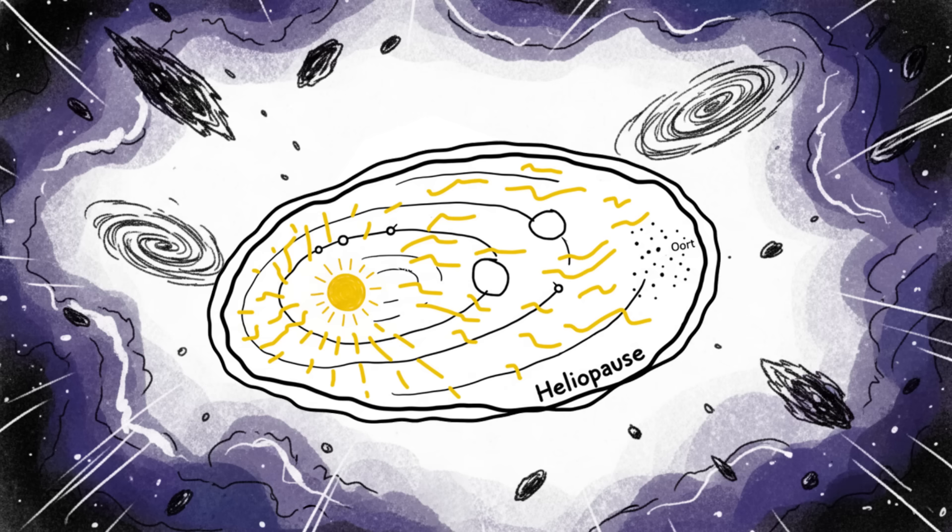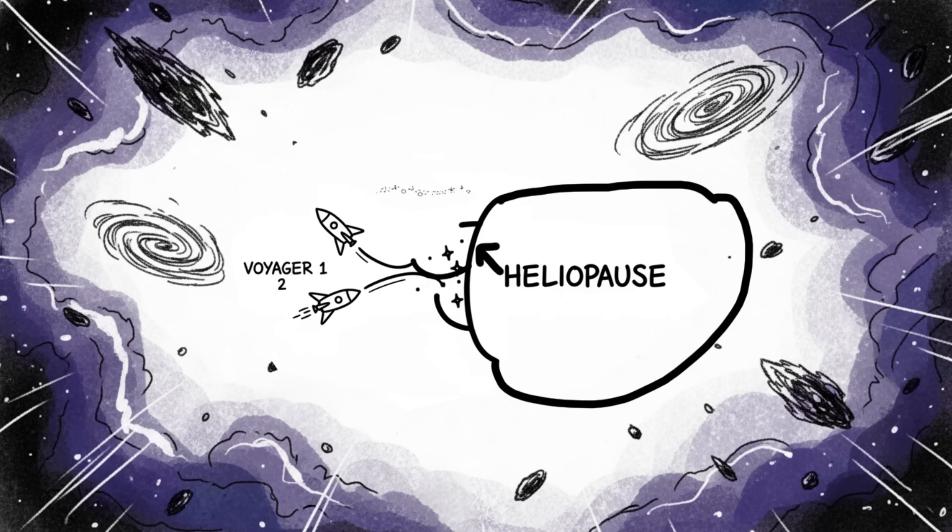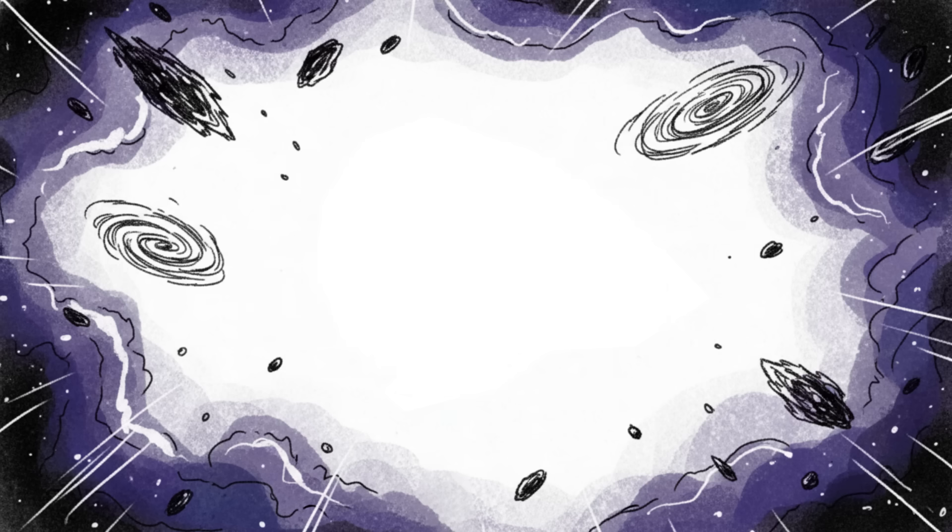The heliopause is the thin, fragile boundary of that bubble. We know it's there because the Voyager probes actually punched through it, sending back data that showed the solar wind speed suddenly dropped to zero. Beyond this bubble is truly alien space, filled with galactic cosmic rays that could scramble unshielded life in seconds.